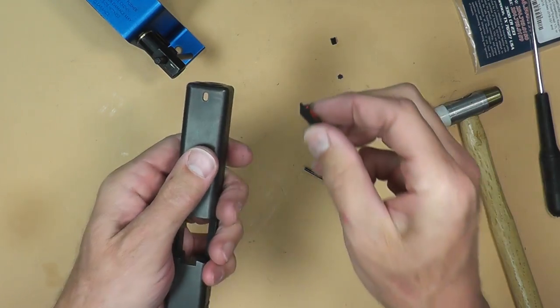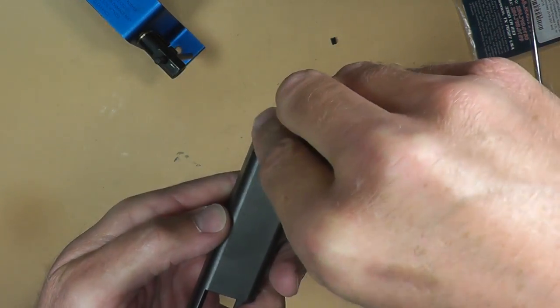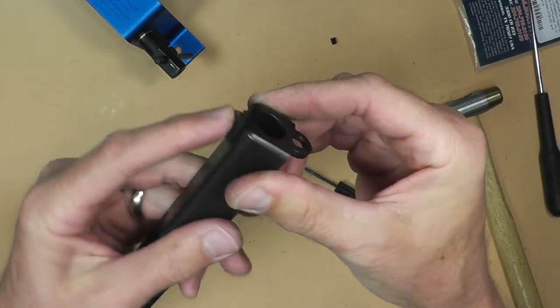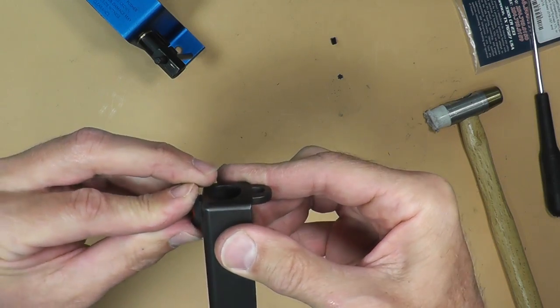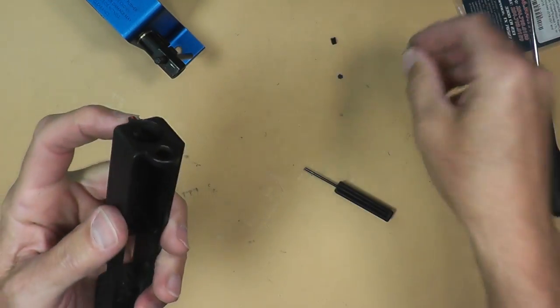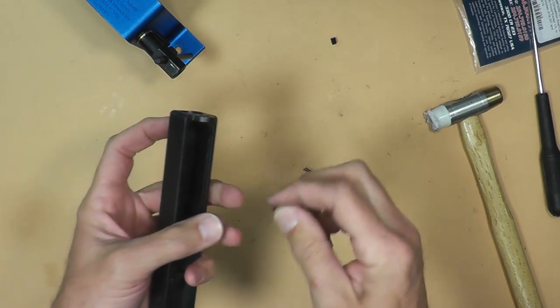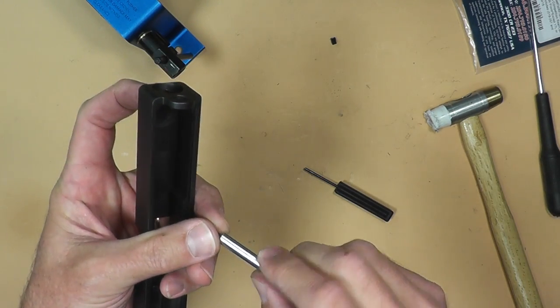So now we're going to take our front sight. Remember, the recessed end is going to go towards the rear. So I'm going to hold that in place. Make sure test fit it in there. There it goes. Snaps in nice and flat. Then I'm going to take our screw. I'm going to put that on the end of my tool as soon as I can find it. There it is.